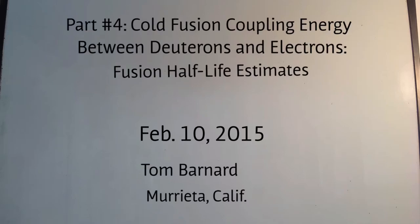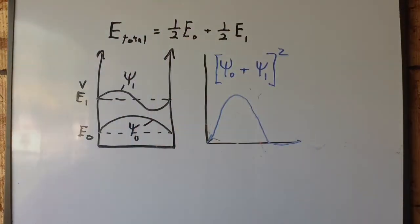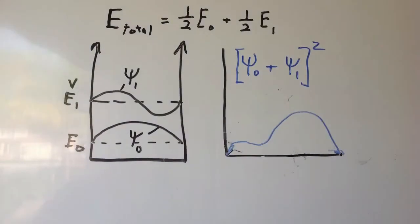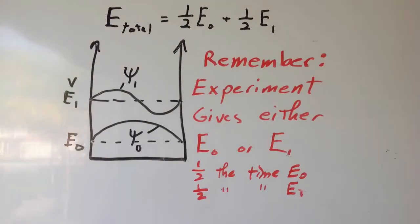Last time in Part 3, we saw how to create particle probabilities that oscillate between states, something like shown here. It should be emphasized that when a particle is in two or more states, an experiment will give only the energy of one of the states involved, in this case 50% of each.